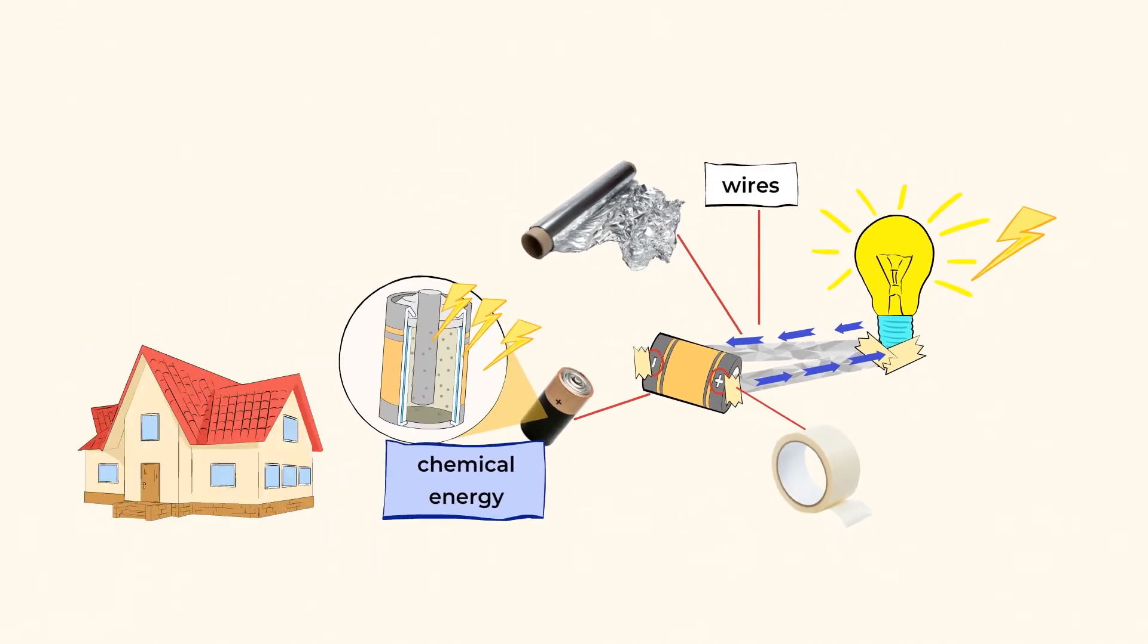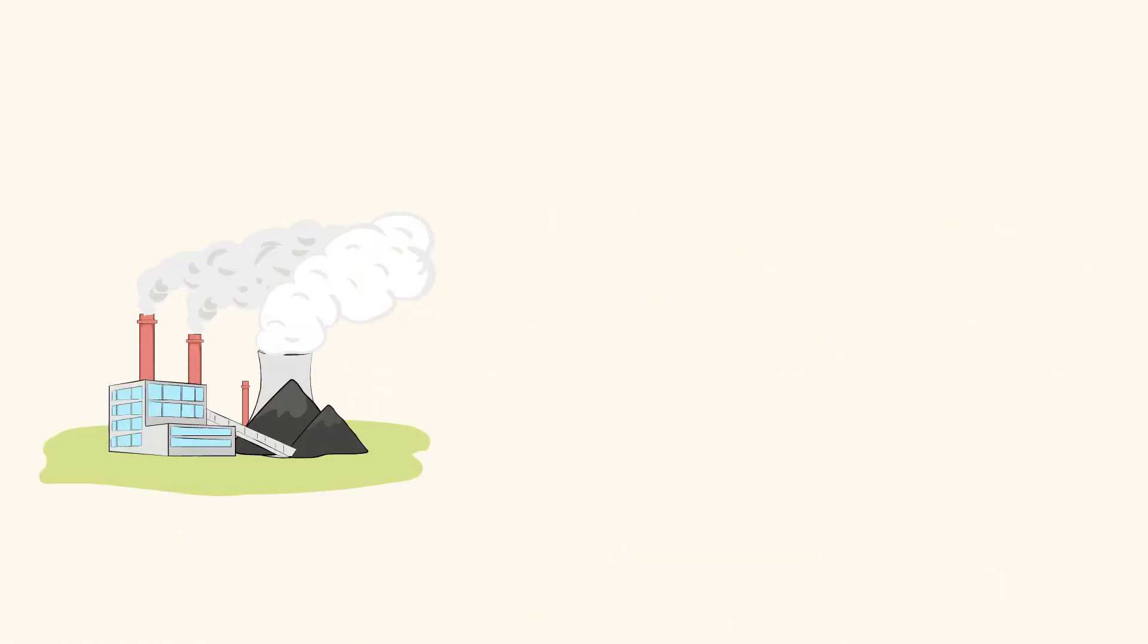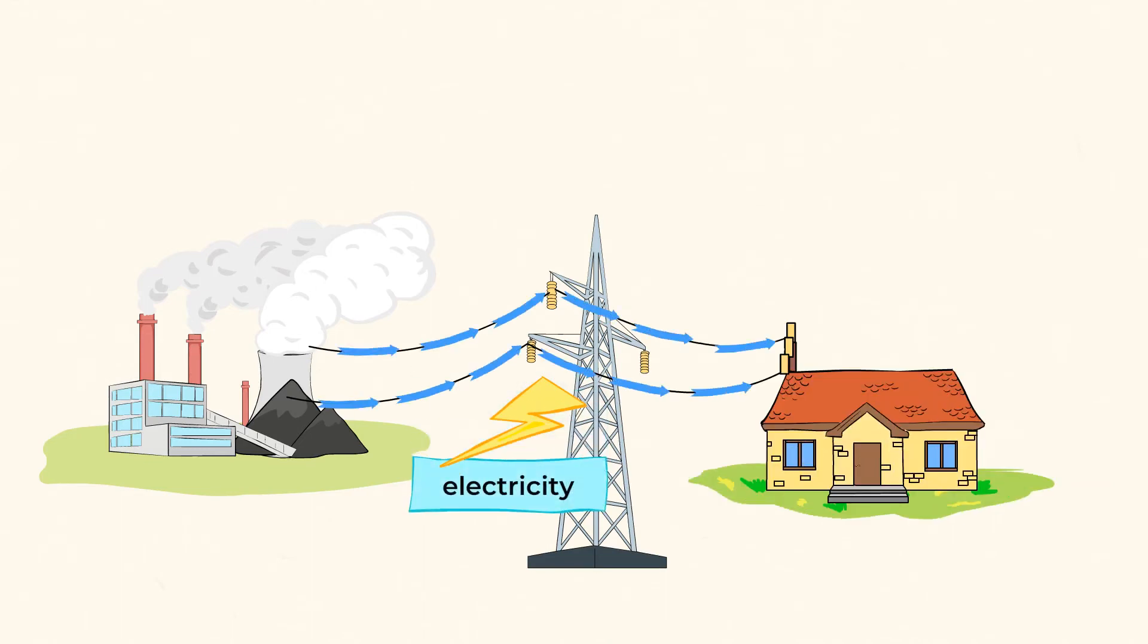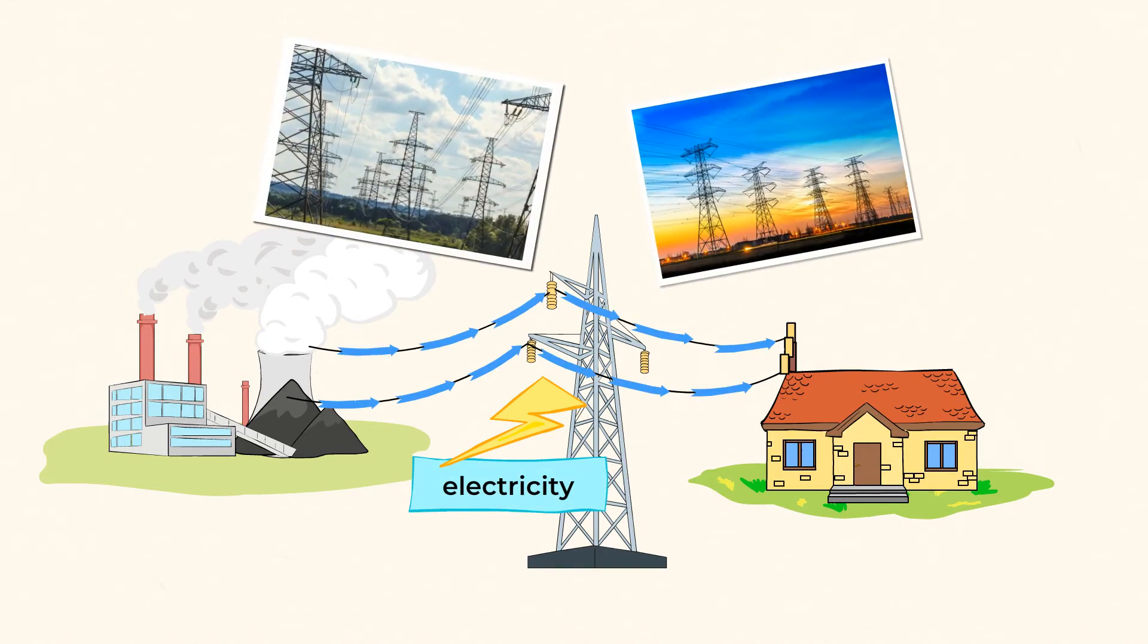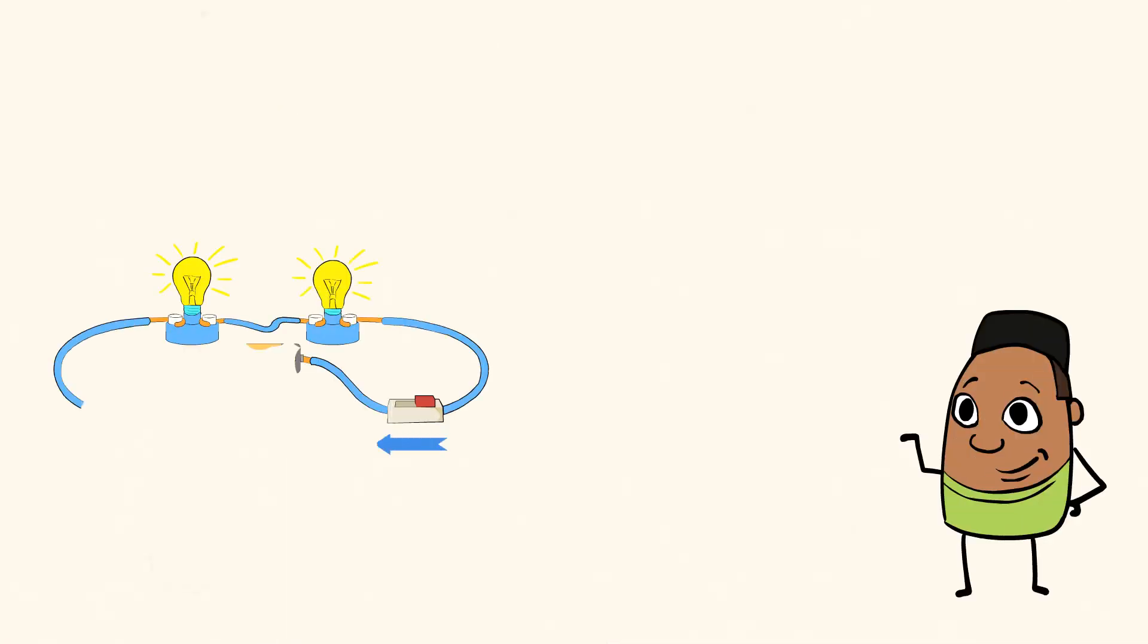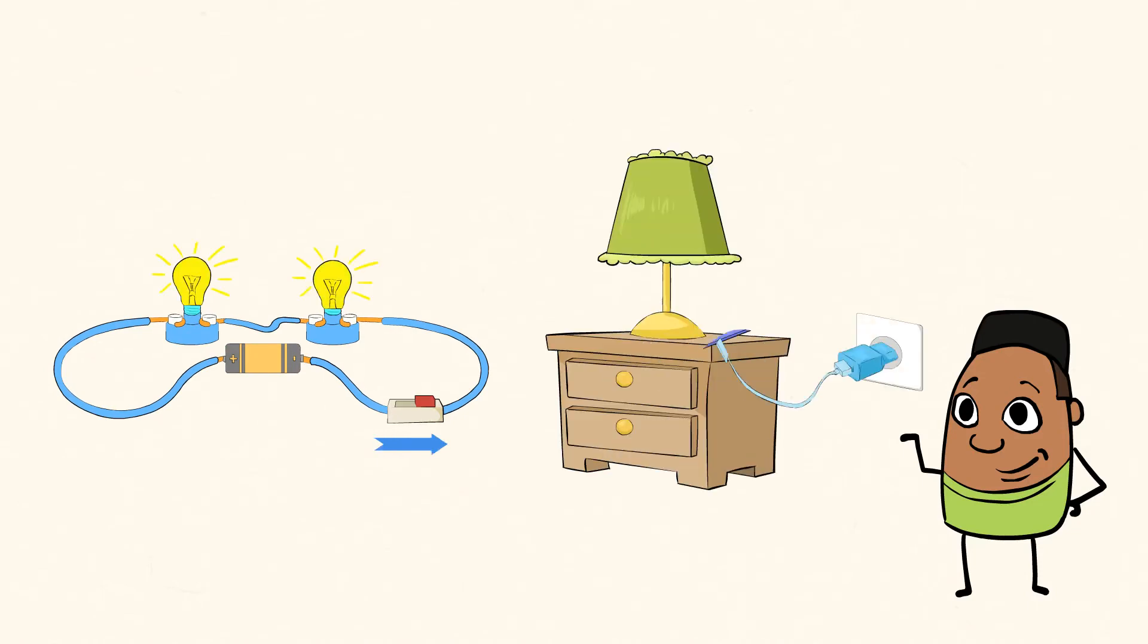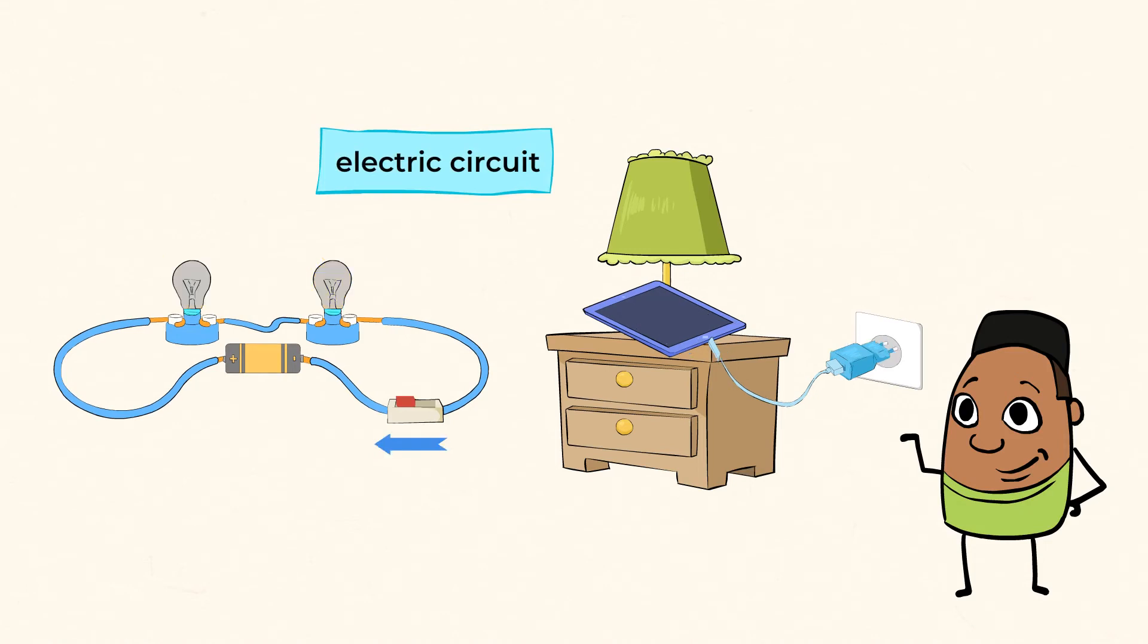On a much larger scale, this is how electricity gets to our homes and buildings. A power plant generates electricity, and that electricity travels along wires just like it traveled through the aluminum foil in our circuit. Electricity is constantly flowing to our homes from power plants, along the miles of wires that you can see throughout your landscape. When we flip on a switch, we're controlling the flow of electricity. Each time you turn on a light switch or plug your tablet into your charger, you are completing an electrical circuit. And when you turn the switch off or unplug your tablet, you're stopping the flow of electricity.